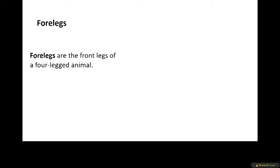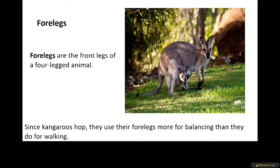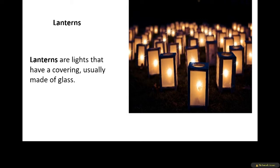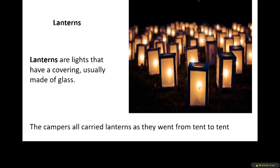Our next word is forelegs. Forelegs are the front legs of a four-legged animal. Since kangaroos hop, they use their forelegs more for balancing than they do for walking. The next word is lanterns. Lanterns are lights that usually have a covering made of glass. The campers all carried lanterns as they went from tent to tent.